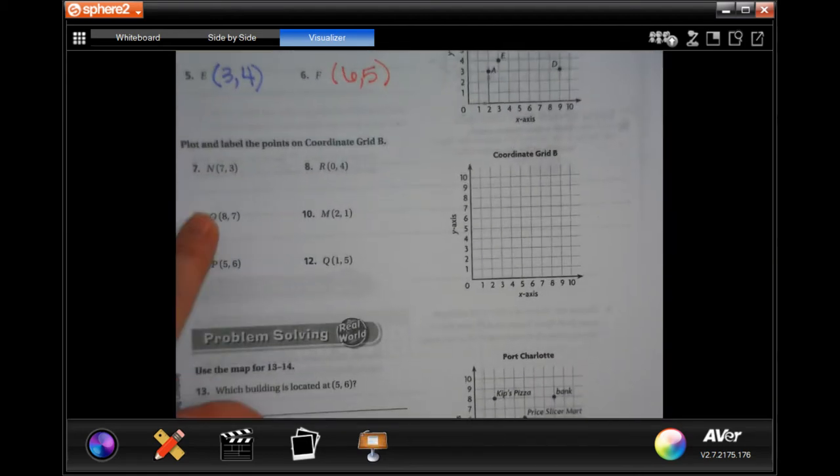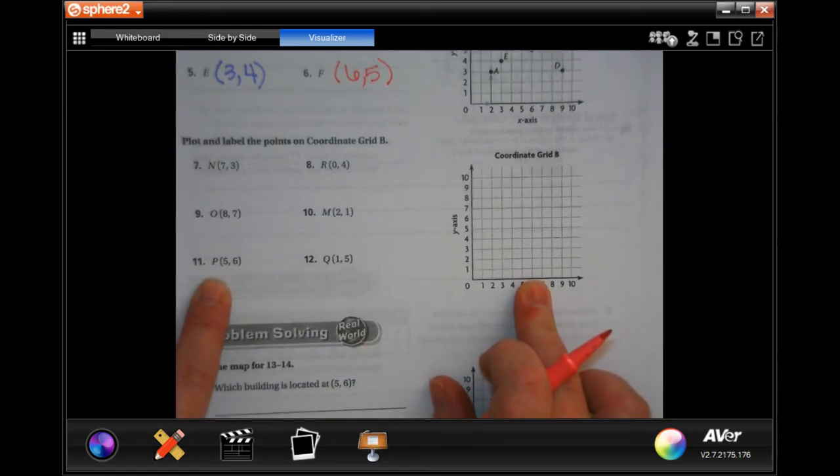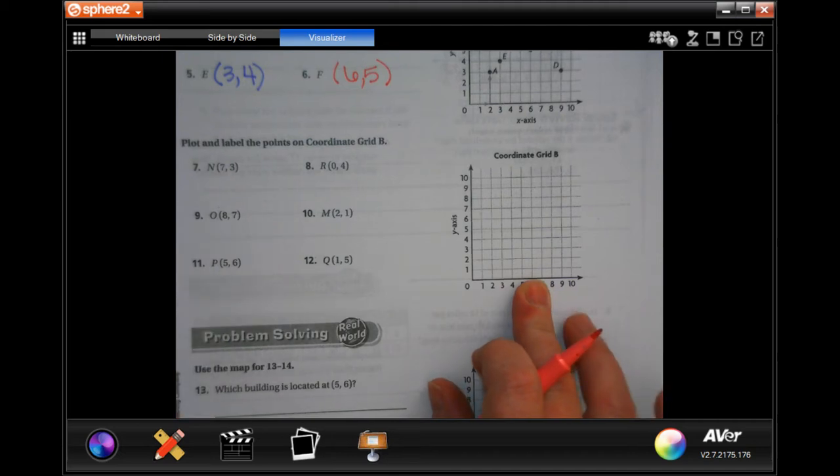You guys are going to now plot those over here. So you guys do seven through twelve. You totally can.